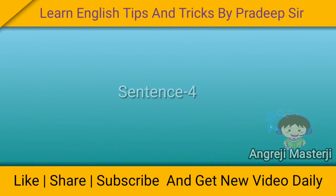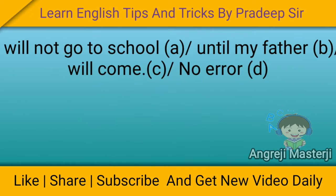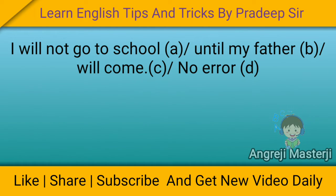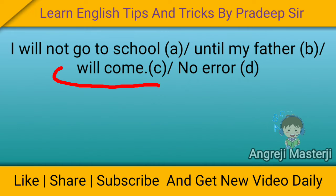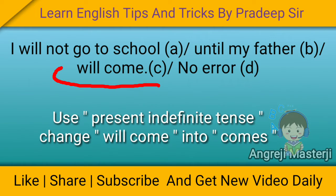Fourth sentence: I will not go to school until my father will come — no error. The correct answer is C — it is an error. We have to use present indefinite tense, not future indefinite, after 'until'. So 'will come' changes to 'comes'.